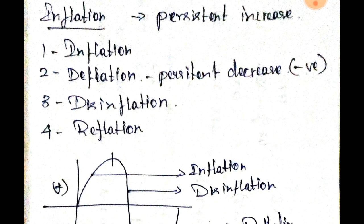If you look at inflation, it's a persistent increase in price level. Inflation means the income — the price level increases. If you do this, you will see the price level increase to a high level. This method is inflation. So if you examine this example, you will see a persistent increase. In that time period, you will have inflation.